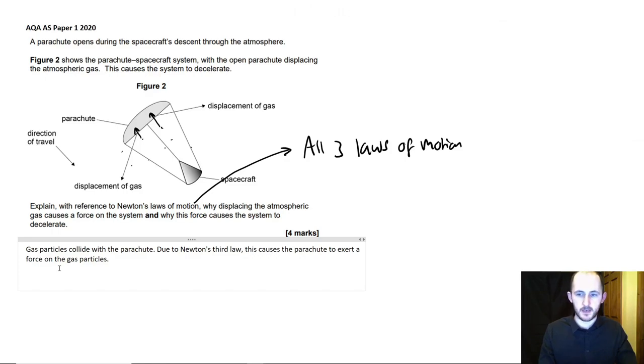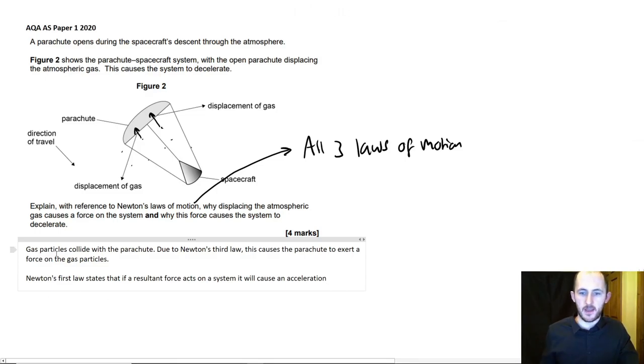Next bullet point, well, that's Newton's third law done. So what does that mean in terms of Newton's second law, or in this case, Newton's first law. Newton's first law states that if a resultant force acts on a system, it will cause an acceleration. So Newton's first law says that an object in constant motion will stay in that motion unless acted on by an outside force. Well, we wrote here that a force is being exerted, which means due to Newton's first law, there has to be some kind of acceleration, some kind of change in motion.